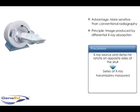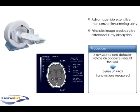A series of X-ray transmission measurements are made at each degree of rotation. Many more images are taken than plain film X-rays. Accordingly, images obtain a greater resolution.